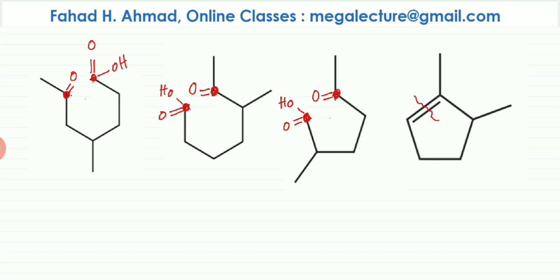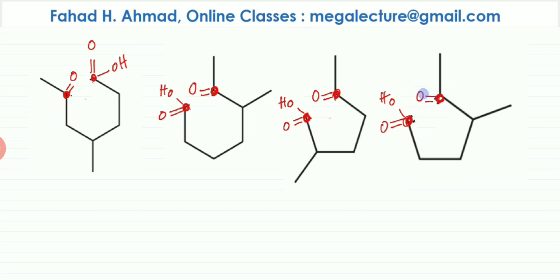For option D, the double bond breaks. One carbon is bonded on one side by a carbon chain, so it changes into a carboxylic acid. The other is bonded on two sides by carbon chains, so it changes into a ketone. We've now determined the oxidation products for all four options.